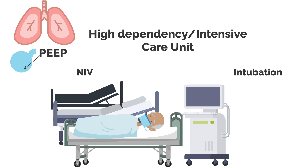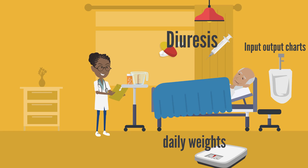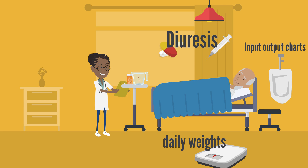This improves ventilation and reduces the work of breathing for the patient. Once the patient has recovered sufficiently and is no longer in respiratory failure after their stint in the critical care unit, they are transferred to the general ward. The principles of management in the general ward are to continue diuresis and to monitor progress by measuring the patient's weight, the input-output chart, and monitoring for complications such as electrolyte imbalances and acute kidney injury.